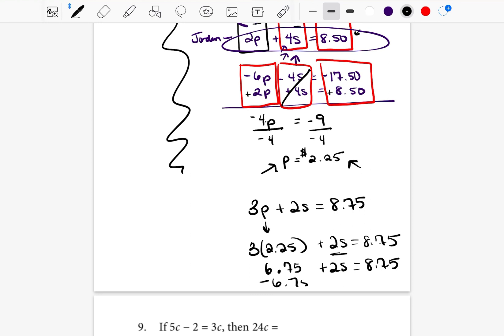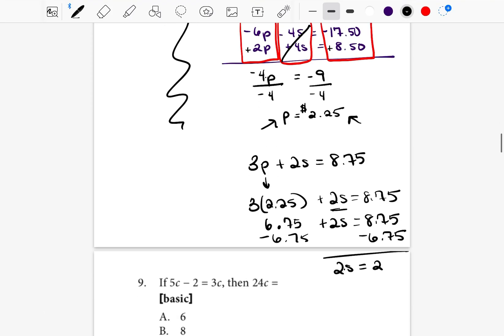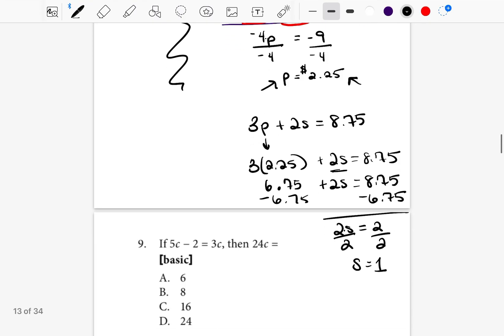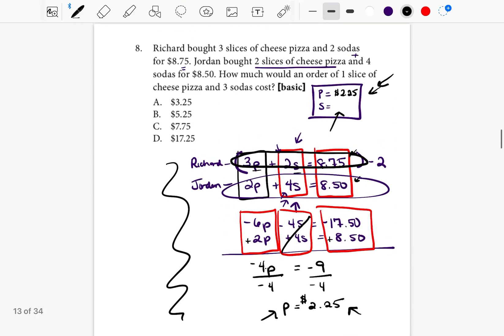We're going to subtract 675 from both sides. You're going to be left with 2S equals 2. To solve for S, right now the S is being multiplied by 2, so to get rid of that 2, you divide. So S is equal to 1. What are we talking about? We're talking about soda and the price of soda. So soda must equal $1 each. So we're going to go back to our box and we're going to write $1.